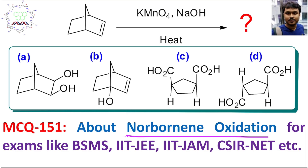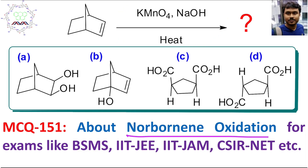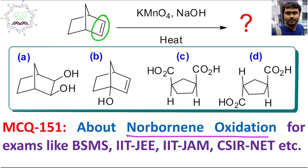Now let's come to the discussion. If you look at the reaction condition, this is nothing but alkene oxidation. KMnO₄ is a strong oxidizing agent, and the oxidation will happen at the electron-rich center. The most electron-rich part of the molecule is obviously the carbon-carbon pi bond or double bond, because the pi electron cloud is above and below the nucleus.